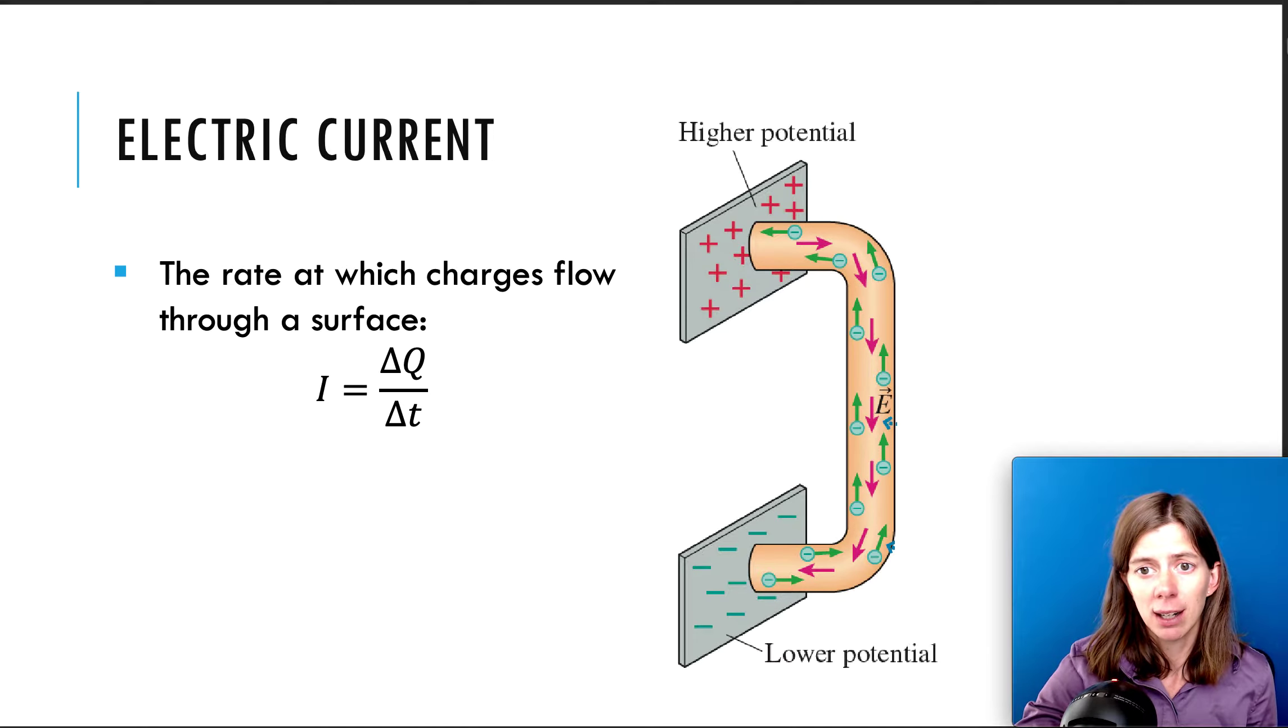This brings up the topic of electric current. Electric current is defined as the rate at which your charges flow, the charges per time. Q is charge, time is T. And the current, we use the letter I. And the unit for current is called ampere. We usually abbreviate amp. And the letter is A.